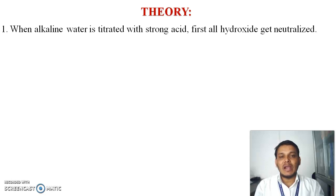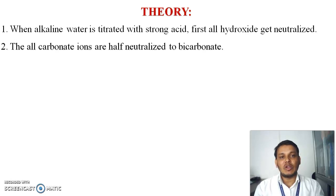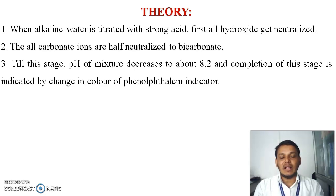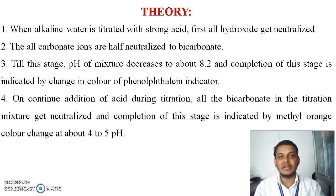The theory behind this: when alkaline water is titrated with a strong acid, first of all hydroxide gets neutralized in the presence of phenolphthalein indicator. Then all carbonate ions get half-neutralized to bicarbonate. The end point is reached when the pH of the mixture decreases to near 8.2, indicated by a change in color of the phenolphthalein indicator.